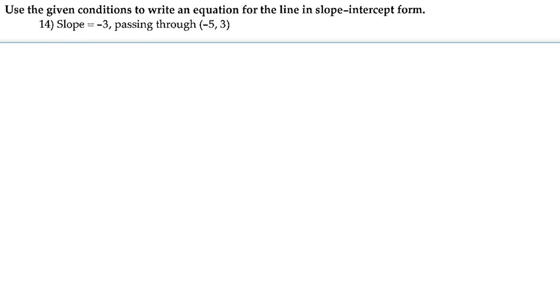For number 14, we're going to use the given conditions to write an equation for the line in slope-intercept form. So the given conditions that we have are the slope and a point on the line.